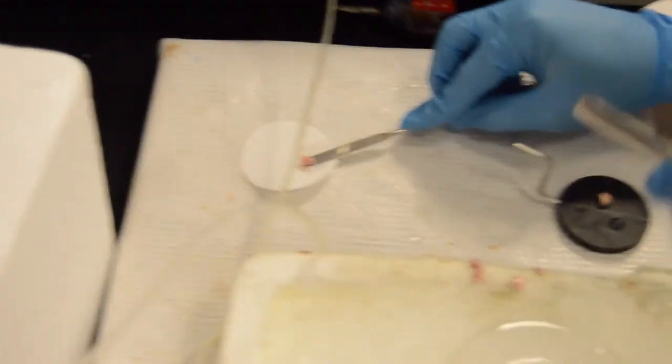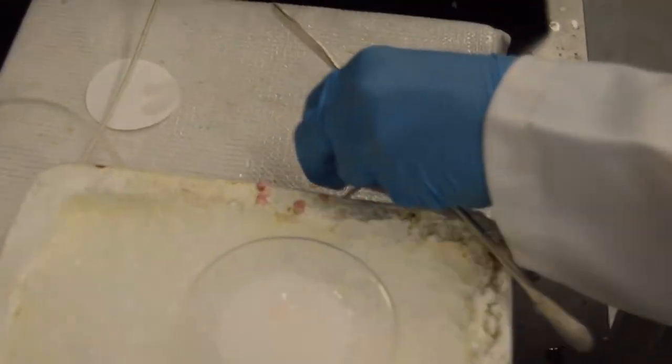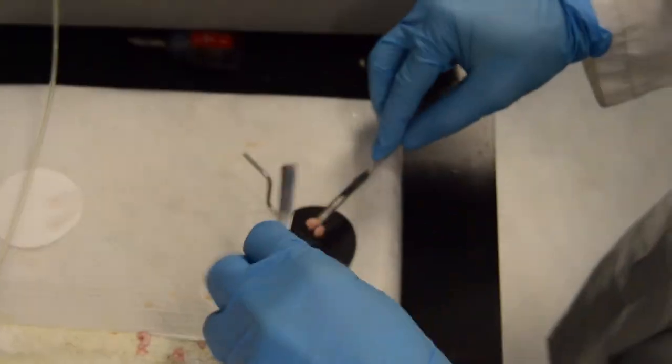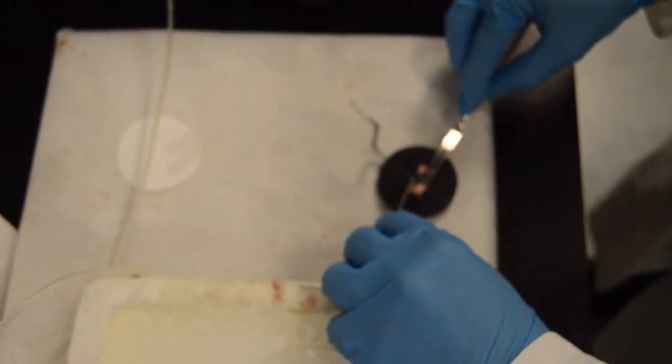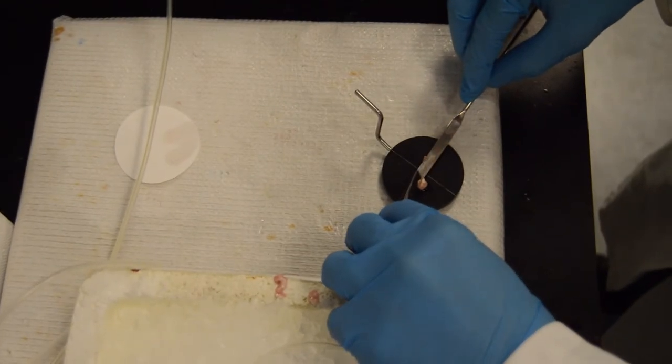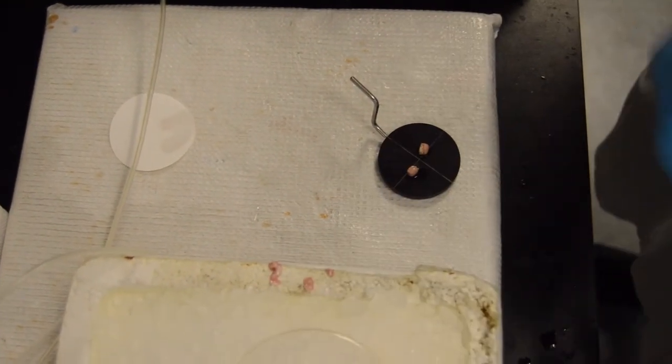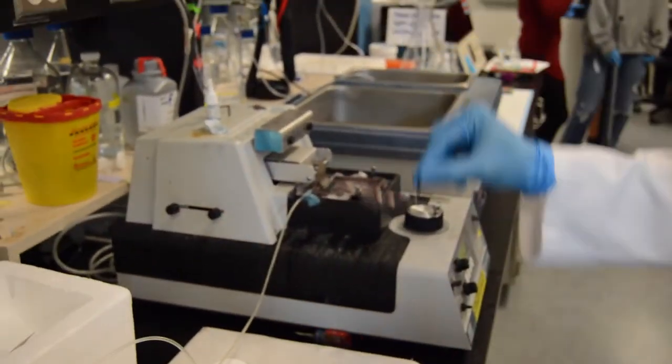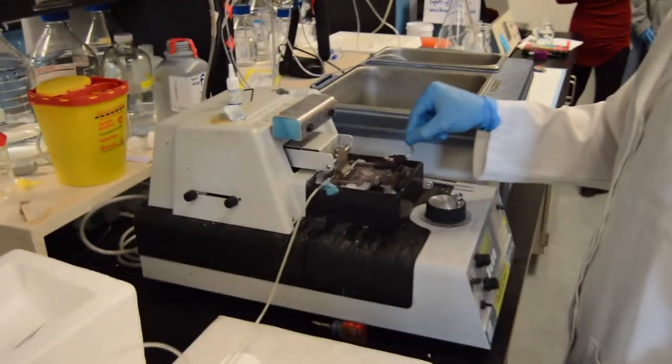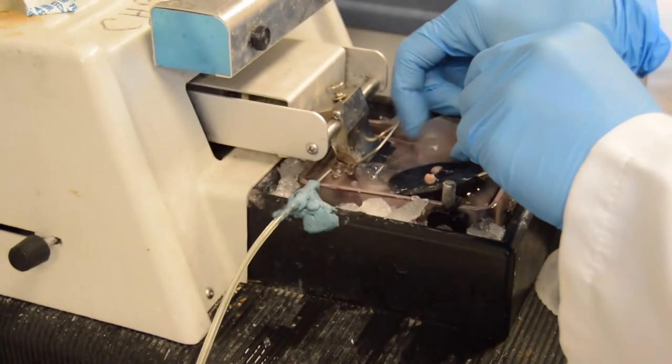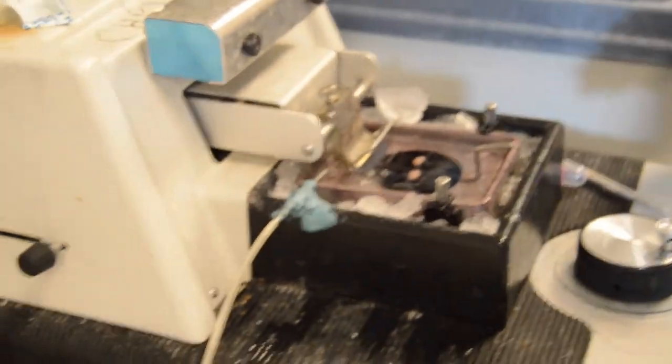We then transfer each cerebral hemisphere to a dry piece of filter paper before putting the cut dorsal surface onto the glue of the chuck. We are very careful to ensure that the hemisphere is placed onto that cut side, so that it isn't knocked out of orientation. We then allow the glue to aerate and dry, and place it into the chamber of the vibratome.